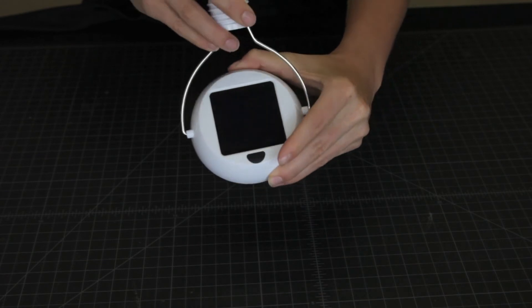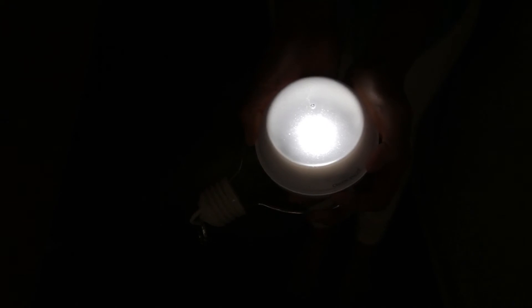To turn the Shivano on, a simple push button is used. For high, just push the button once, and for low, twice.